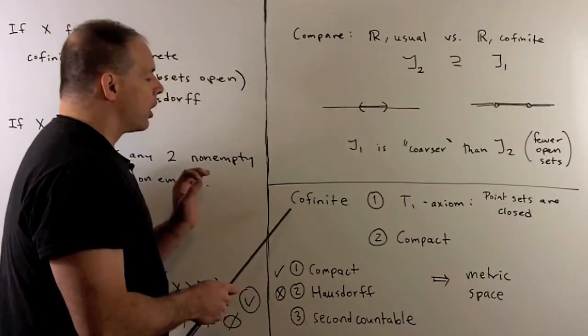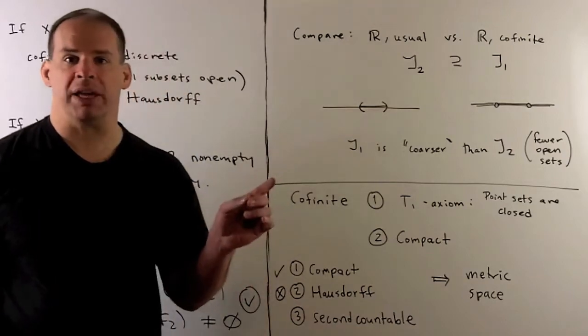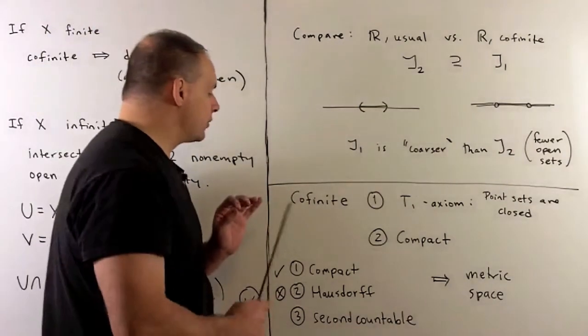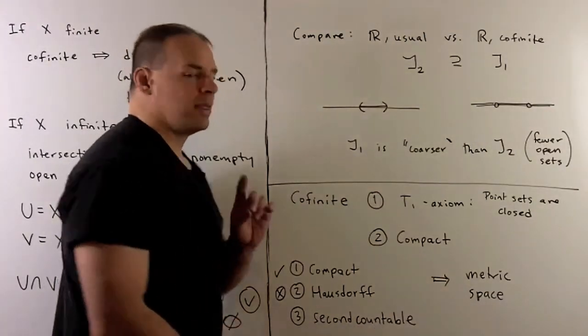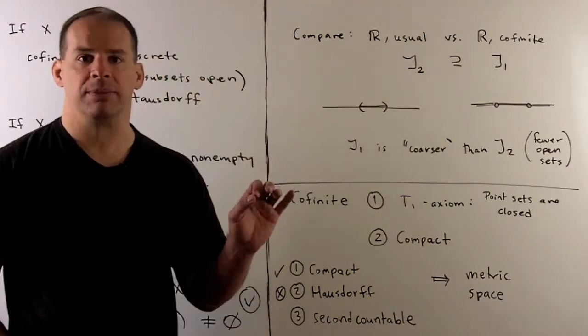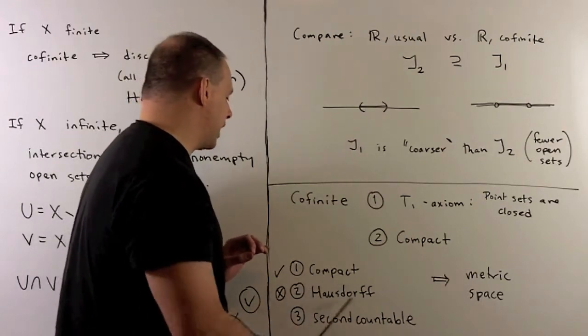Note, if our space is infinite, we're not Hausdorff, so we can't be a metric space. But we have a result that says, for compact Hausdorff, second countable, then we can put a metric on our space. So that shows that we'll hit at least one, but definitely not the other also.